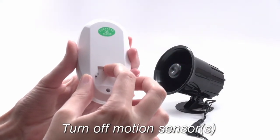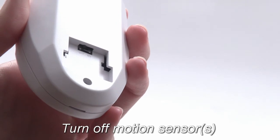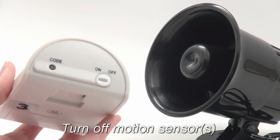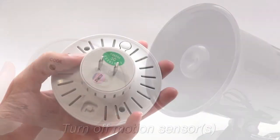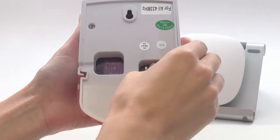The first step is to turn off your motion sensors. There are a few different models, but they all have power switches. Next, if you have any other Sirens, you will need to unplug them and turn them off if they have power switches.